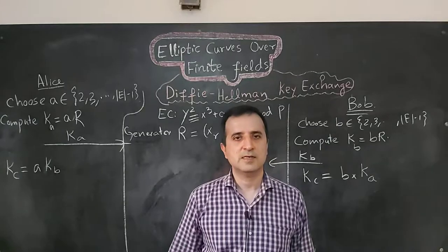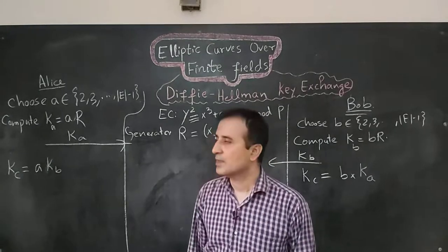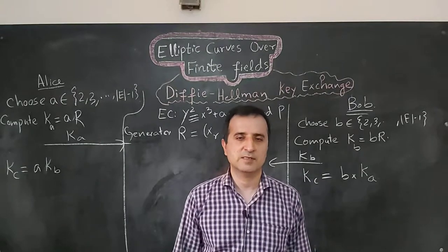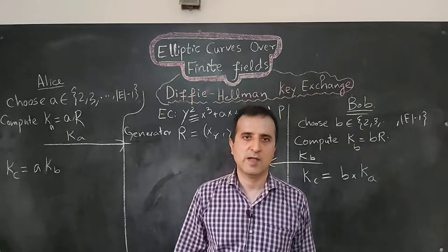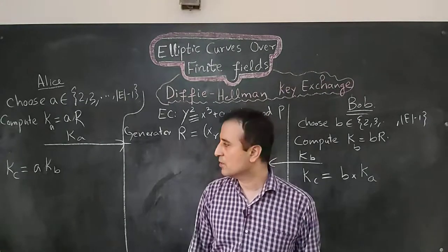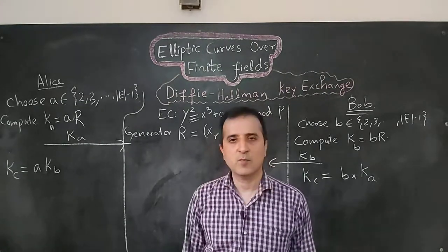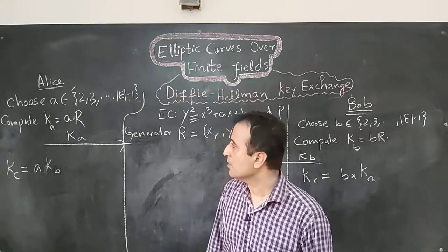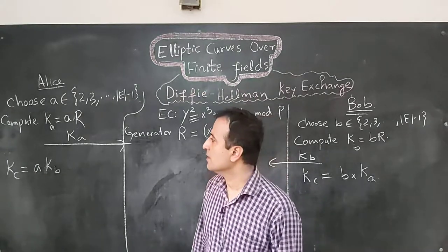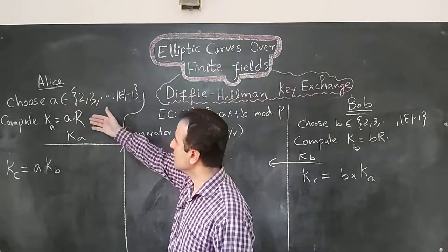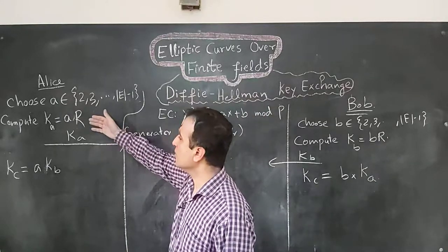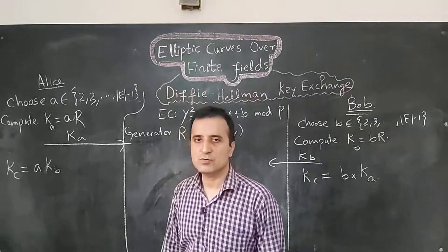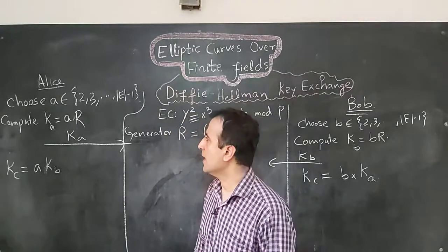Now let's analyze and think deeper. The first question that can be asked is: what kind of operations do Alice and Bob have to do in order to compute a common private key? Alice and Bob can compute their public keys and later compute their common private key using the double-and-add algorithm.